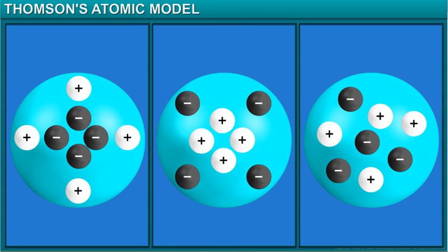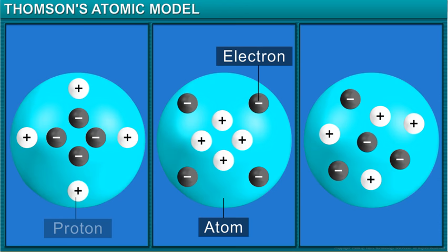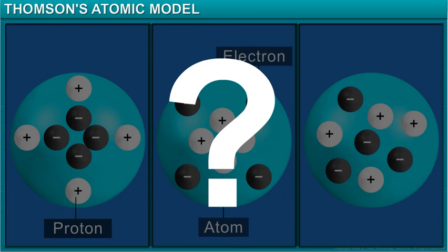These discoveries made the scientists believe that an atom was divisible and made up of electrons and protons. What they didn't know at the time was how these electrons and protons were arranged within an atom.